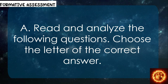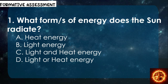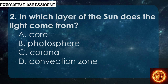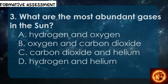For your formative assessment, read and analyze the following questions and choose the letter of the correct answer. Number 1: What form or forms of energy does the sun provide? A. Heat energy, B. Light energy, C. Light and heat energy, D. Light or heat energy. Number 2: In which layer of the sun does the light come from? A. Core, B. Photosphere, C. Corona, D. Convection zone. Number 3: What are the most abundant gases in the sun? A. Hydrogen and oxygen, B. Oxygen and carbon dioxide, C. Carbon dioxide and helium, D. Hydrogen and helium.